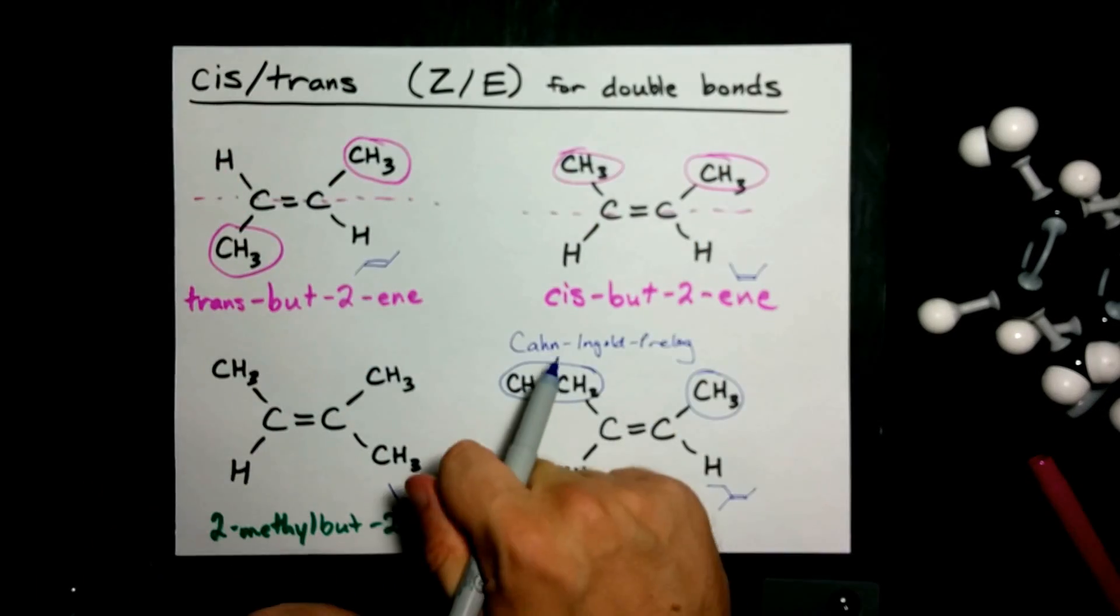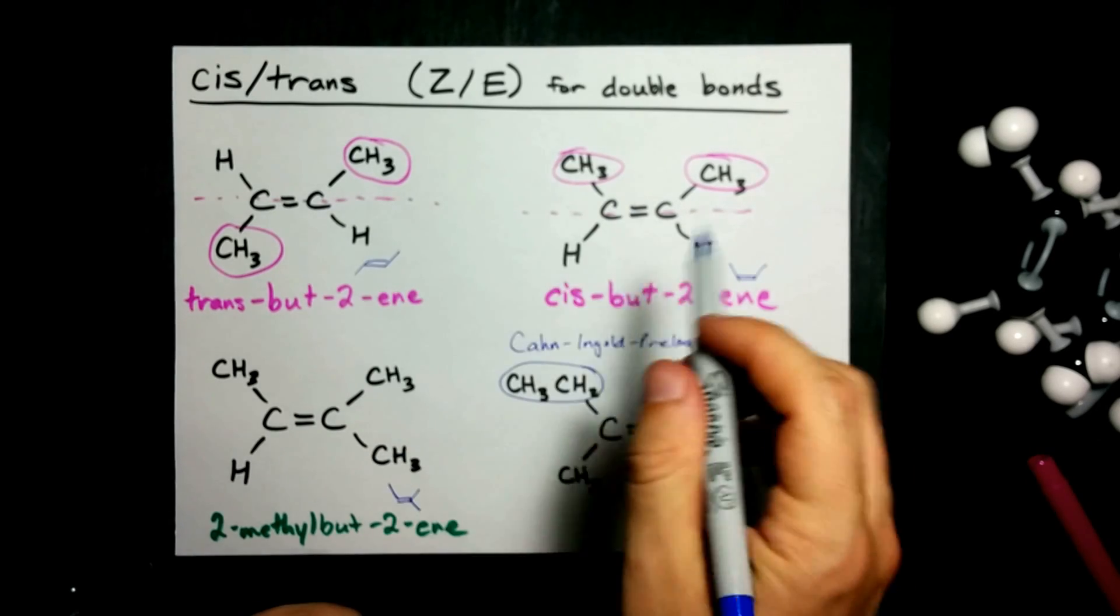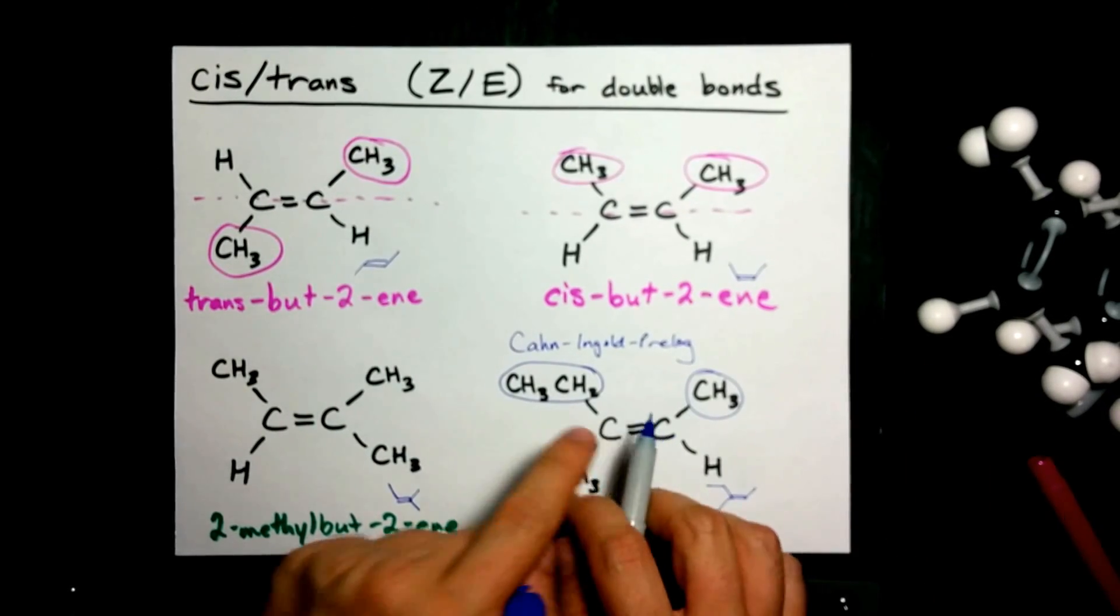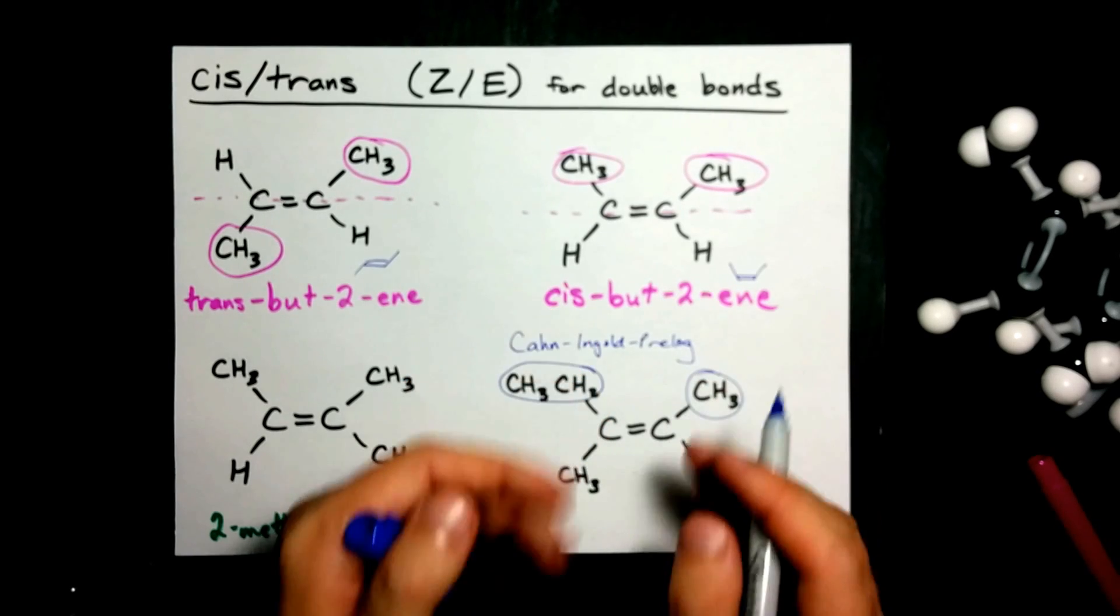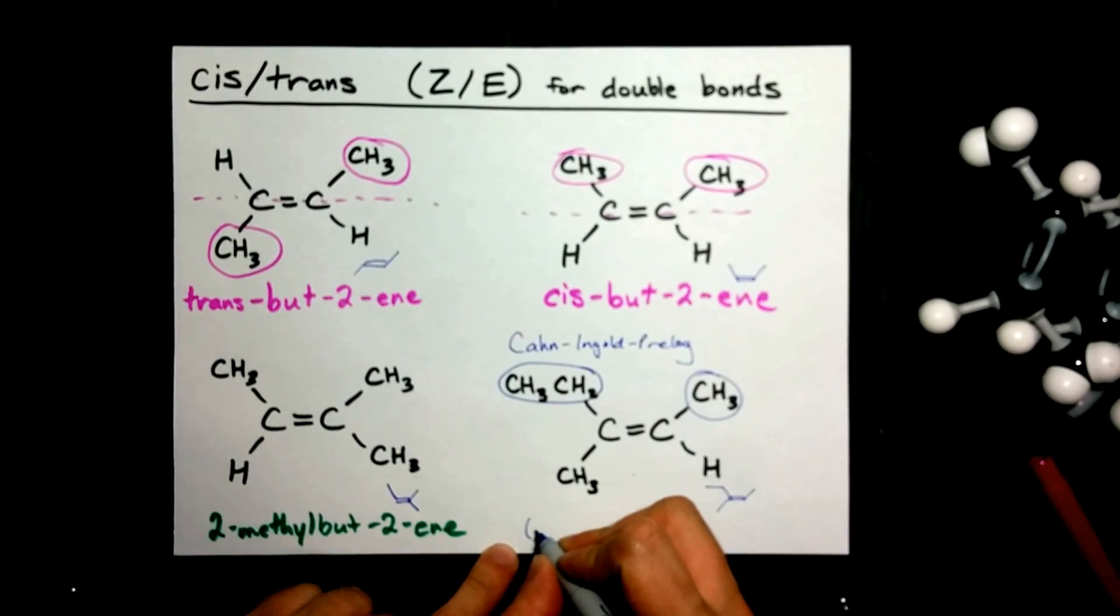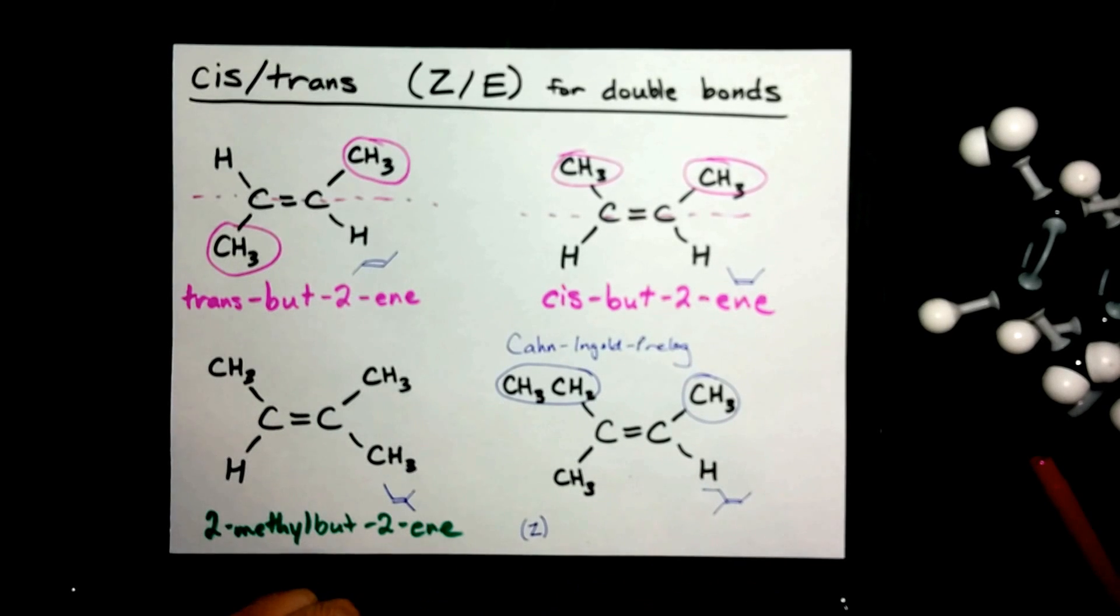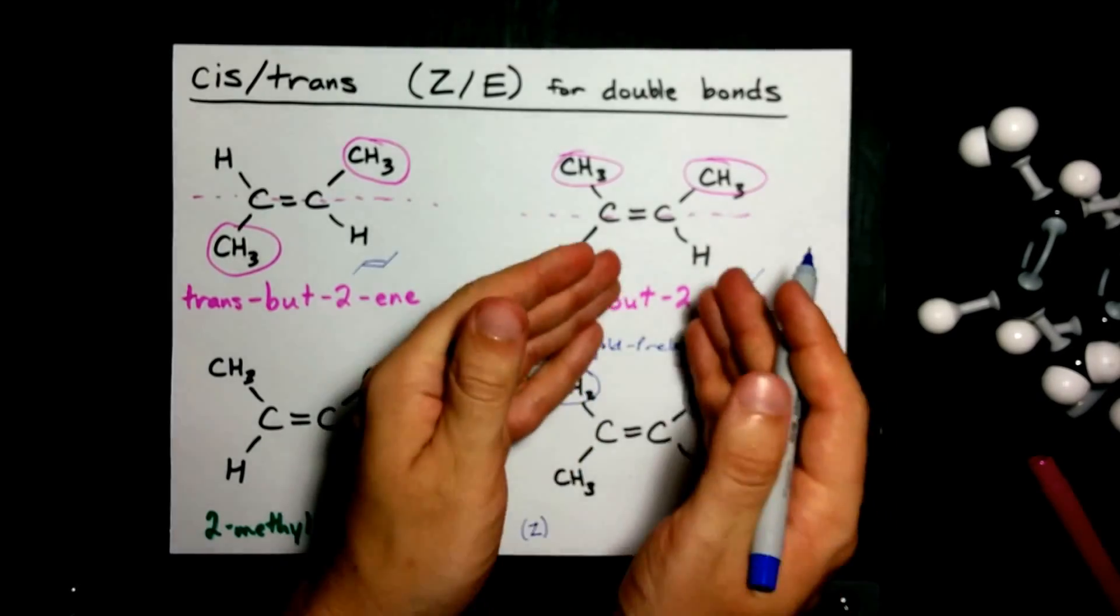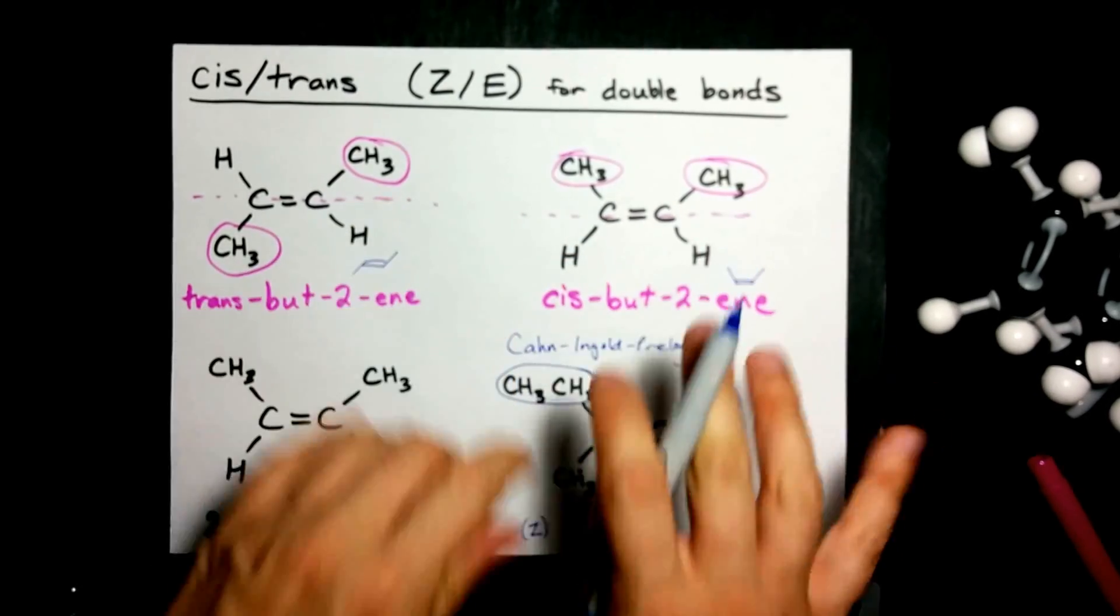The more official or Cahn-Ingold-Prelog or IUPAC way of doing this is to say if the two groups that have highest precedence are on the same side, then you preface the name with the letter Z. The Z tells us that the two precedence groups are on the same side, i.e. they're cis.